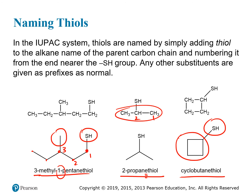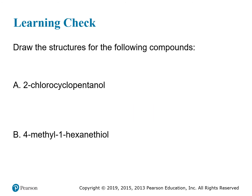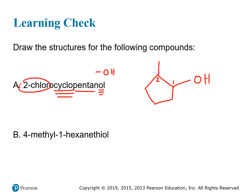Now let's look at drawing structures from names. The first example is 2-chlorocyclopentanol. The OL ending tells us it's an alcohol with an OH group. Pentanol means five carbons, and 'cyclo' means it's a closed ring — like a pentagon. Since it's cyclopentanol, place the OH anywhere; that carbon becomes carbon one. Then count to carbon two in either direction — that's where the chlorine group goes. This gives us the structure of 2-chlorocyclopentanol.